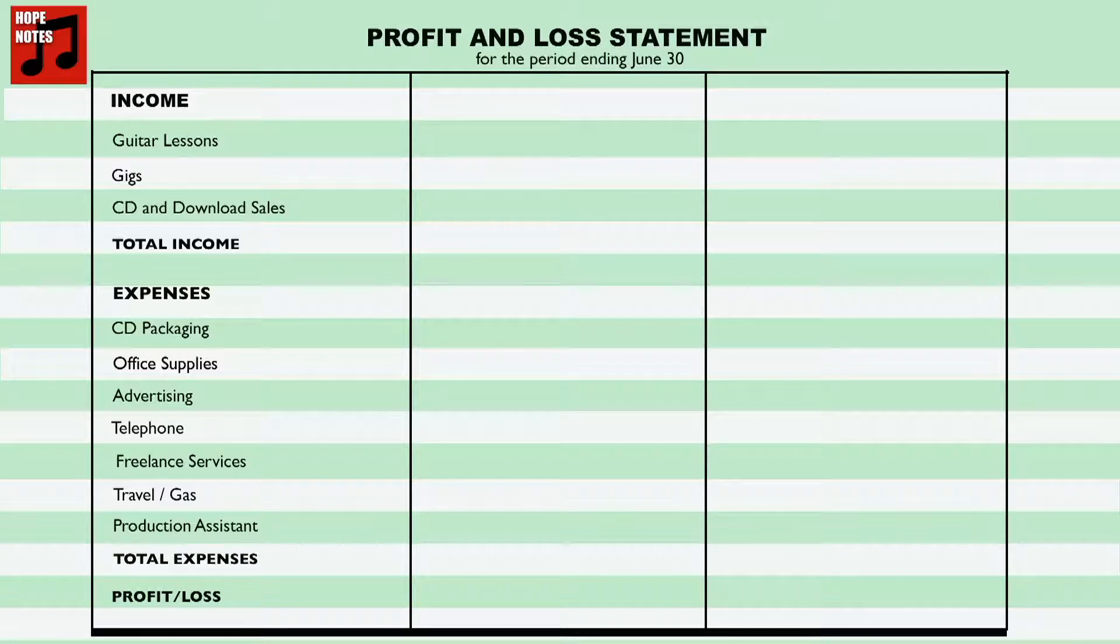At the end of his first month of operation, Anthony prints a financial report known as a profit and loss statement. During the month, he taught 24 guitar lessons and earned $600. He played 5 gigs and earned $500. He sold 20 CDs and 14 music downloads for a total of $260. Anthony's total income for the month is $1,360.